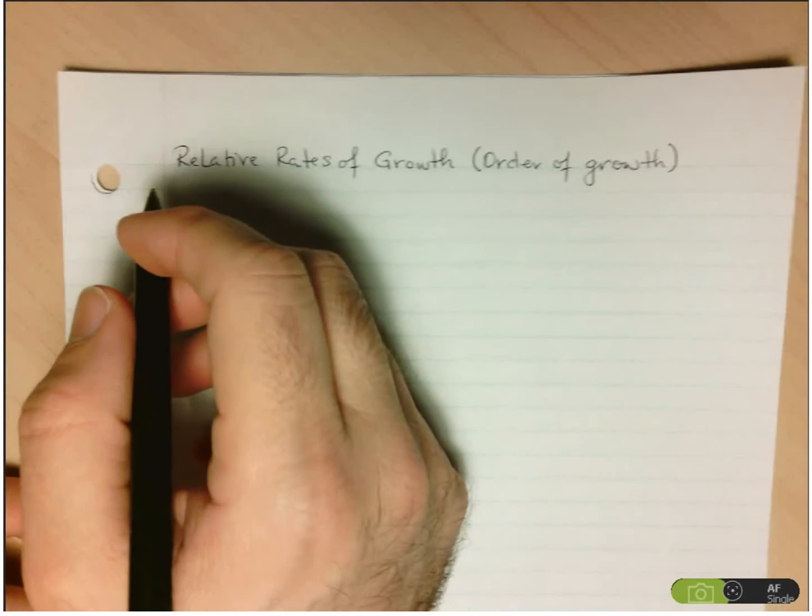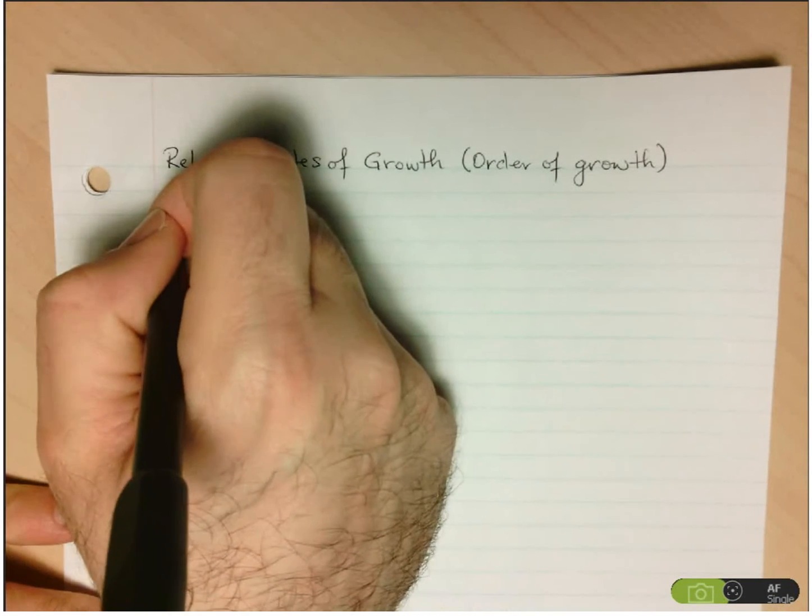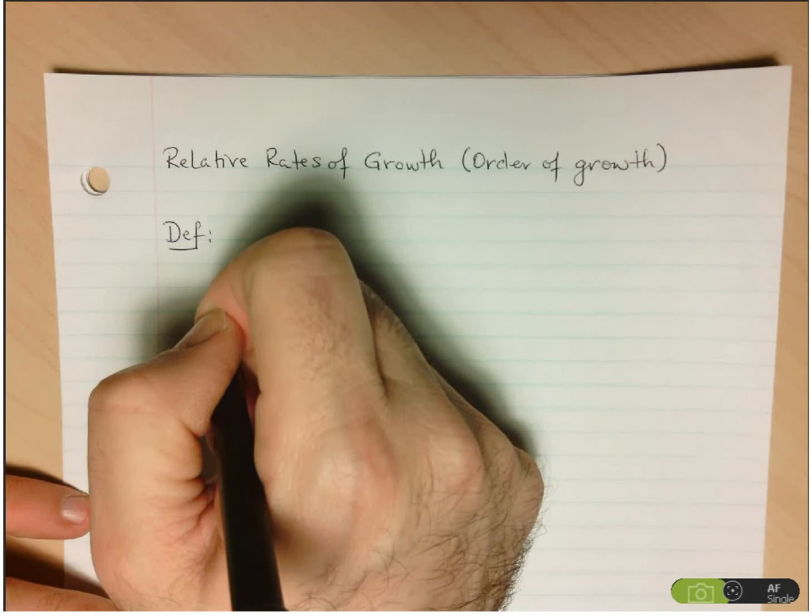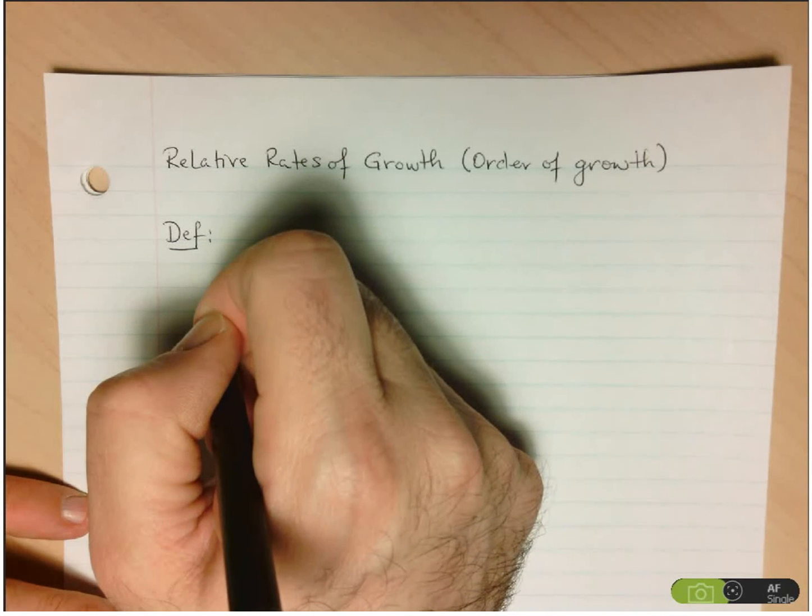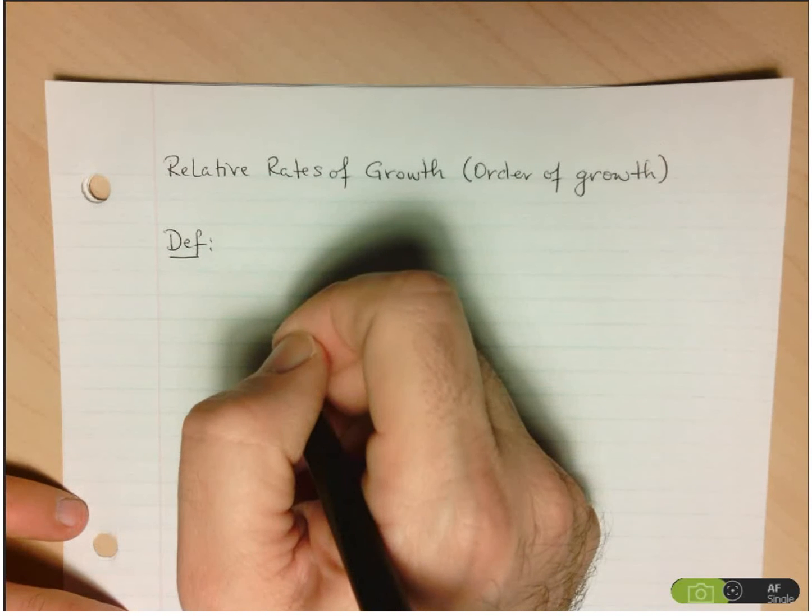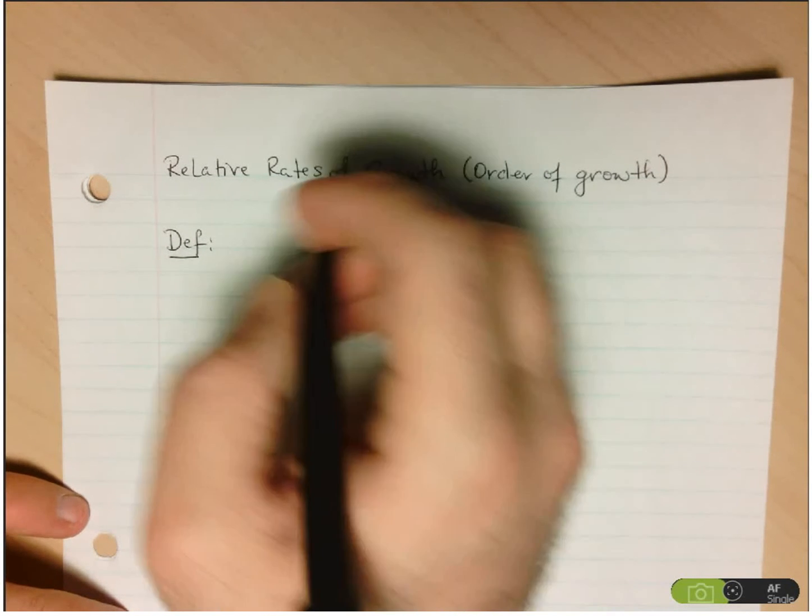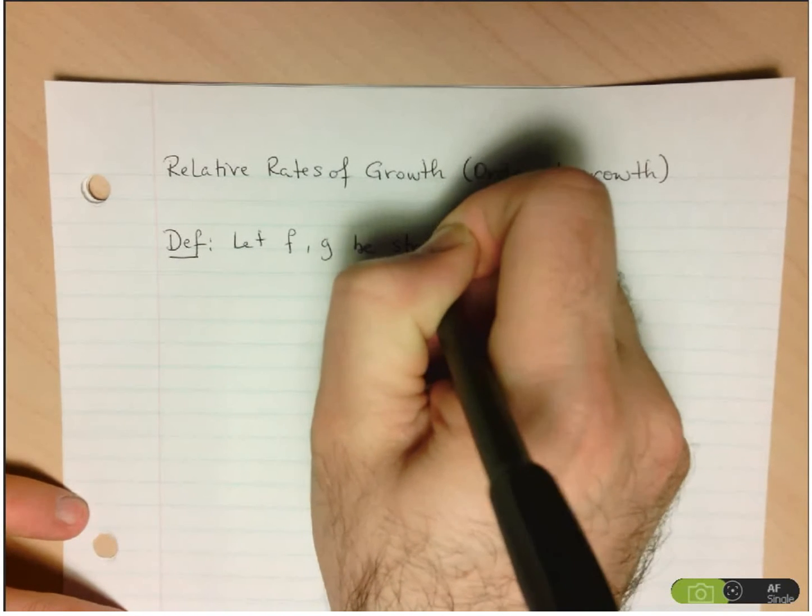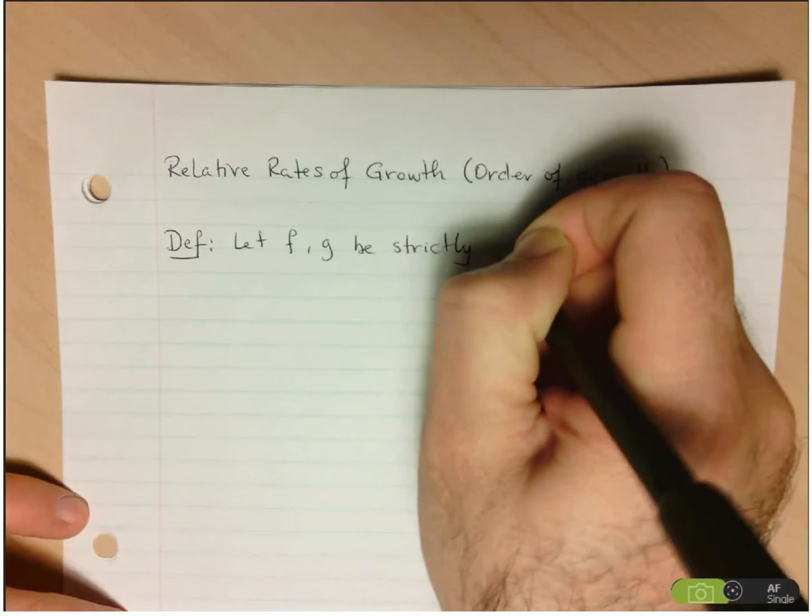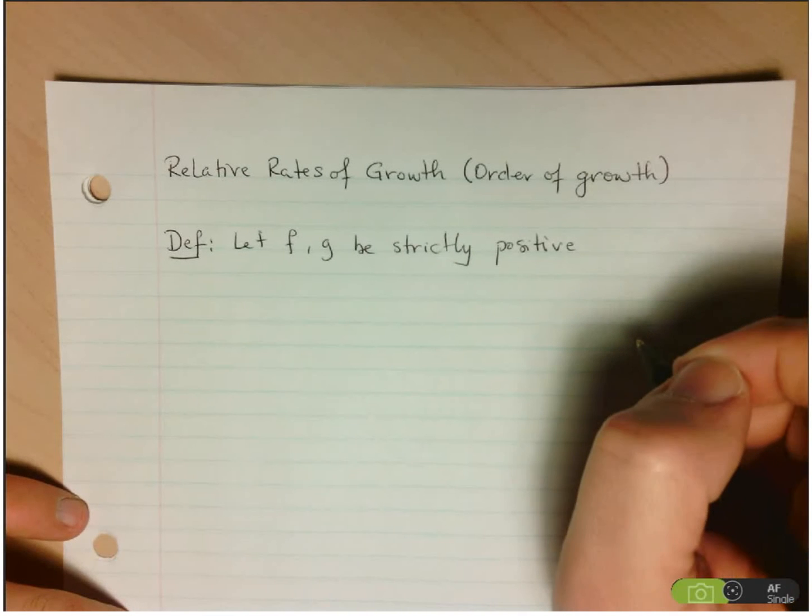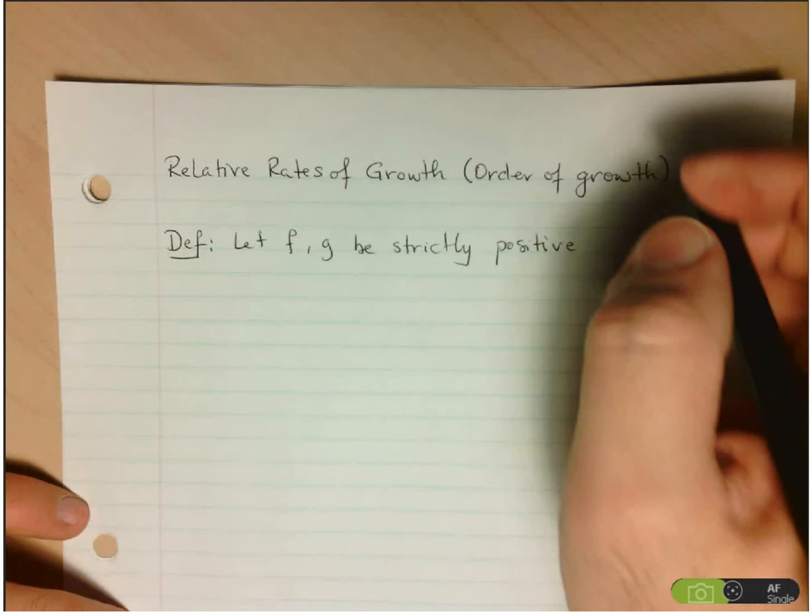And that leads us to our definition here. So when we're working with relative rates of growth, and for now, we're going to start with just talking about positive functions and you can make the appropriate alterations if you're talking about functions that are actually decreasing to negative infinity. So we'll say, let f and g be strictly positive.